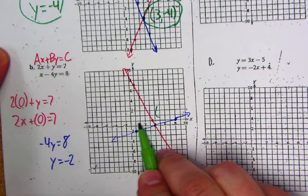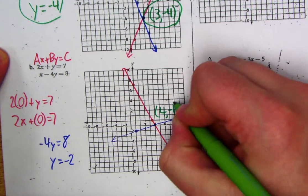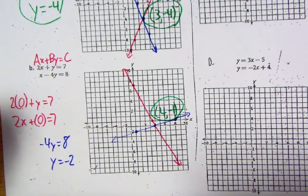Should be, let's see, 1, 2, 3, 4, and that one. So 4, negative 1. All right. Third one.